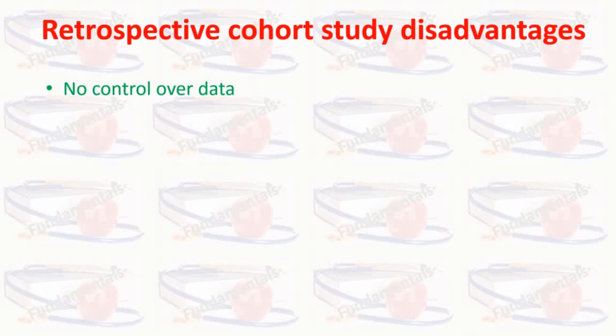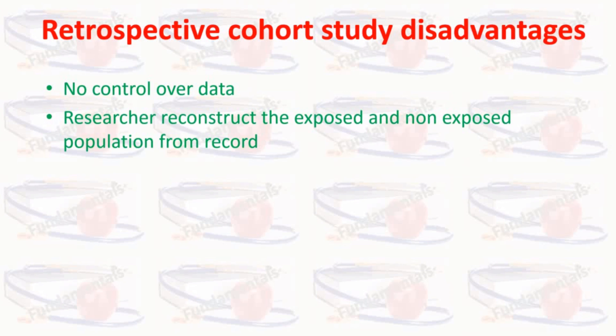In a prospective cohort study, investigators are typically present from beginning to end of the observation period. However, it is possible to maintain the advantages of the cohort study without the continuous presence of the investigator or having to wait a long time, through the use of the retrospective cohort study. Although the investigator was not present when the exposure was first identified, he reconstructs the exposed and unexposed population from records and then proceeds as though he had been present throughout the study.